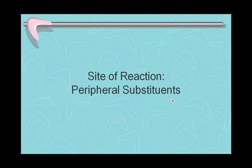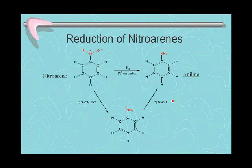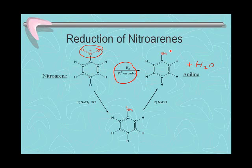Let's look now at some of the sites outside of the ring itself — the peripheral substituents. One of the best groups to undergo chemical reaction is the nitro group. The NO2 group is a highly oxidized form of nitrogen, and it's possible to replace the oxygens and reduce the nitrogen by placing the nitro group under reducing conditions. One set of conditions involves using hydrogen and palladium on carbon. Under these conditions, the hydrogen molecules bind to the surface of the palladium, and those hydrogen atoms react with the nitro group, generating water molecules and reducing the nitro group to an NH2 group.